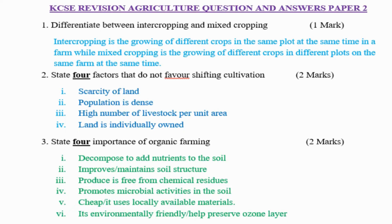Question number 1: Differentiate between intercropping and mixed cropping. The answer is: intercropping is the growing of different crops in the same plot at the same time on a farm, while mixed cropping is the growing of different crops on different plots on the same farm at the same time.